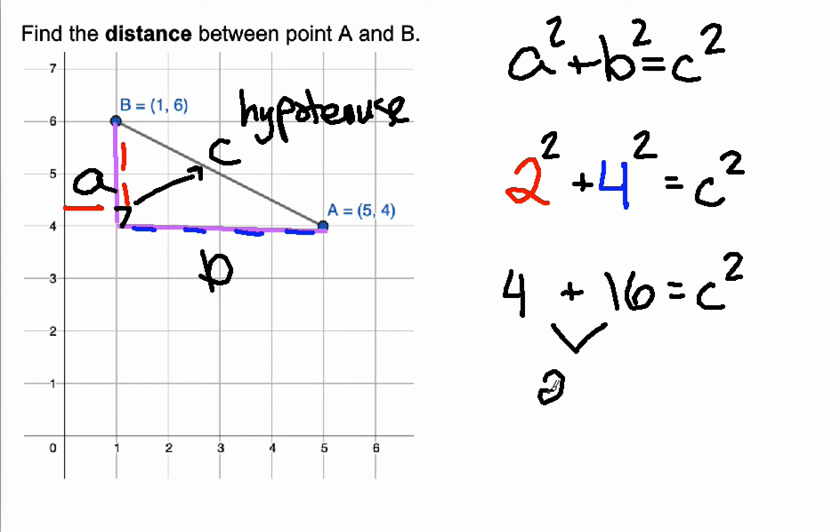I'm going to add these up together, and that's 20 equals C squared. And now what I'm going to do is I'm going to take the square root of both sides. This will allow me to get C by itself. So C is the square root of 20.